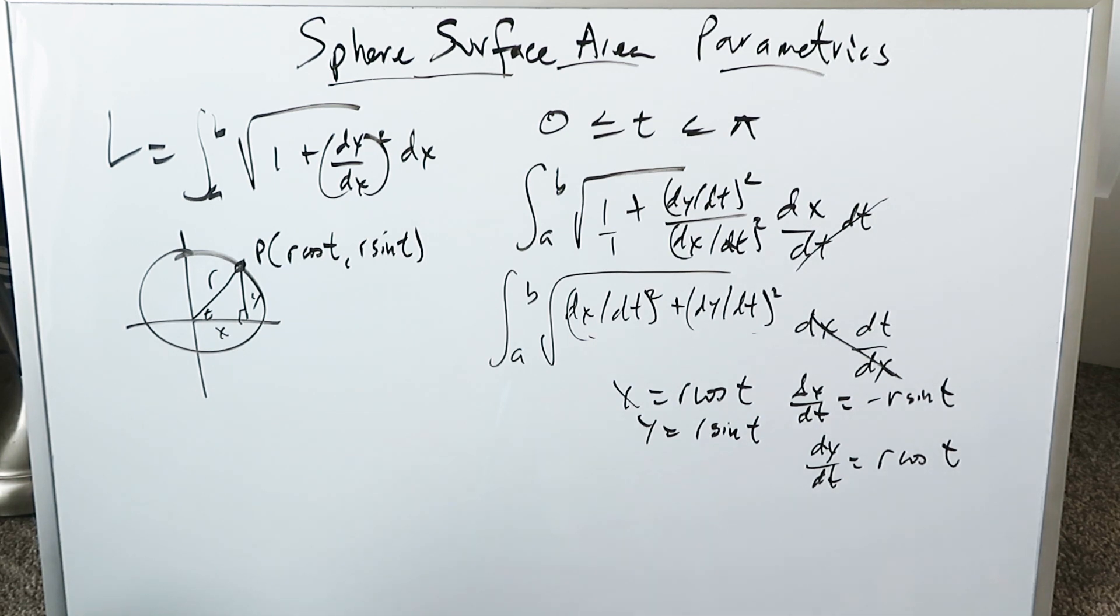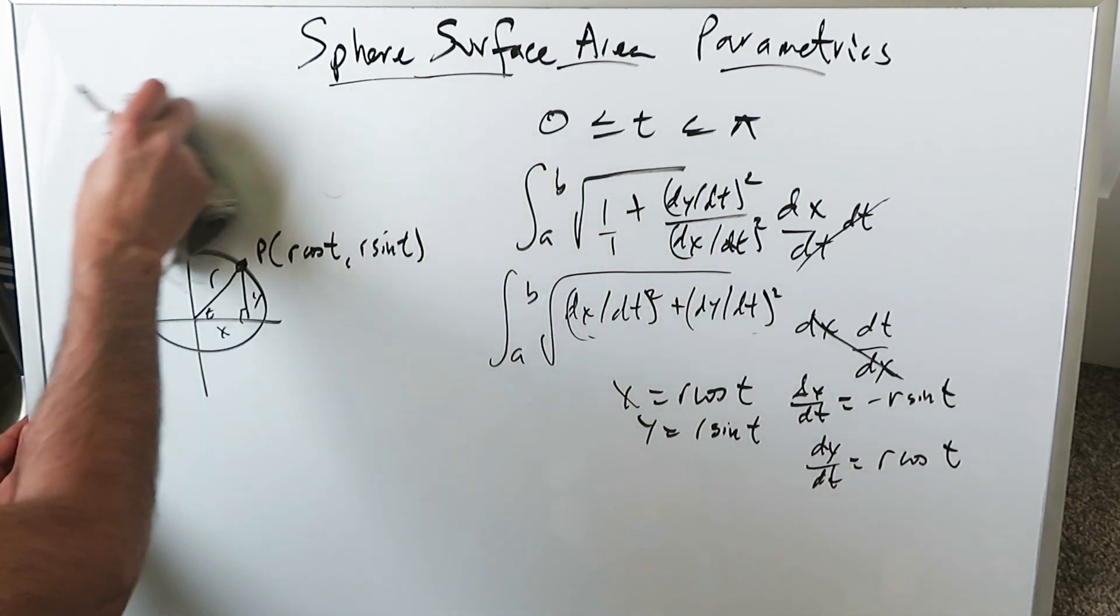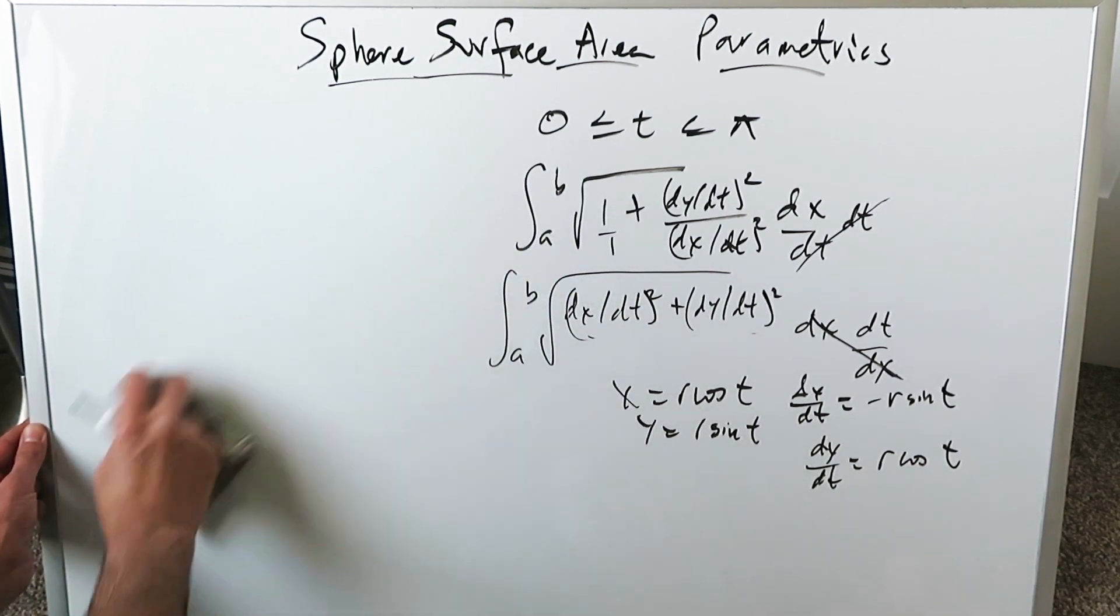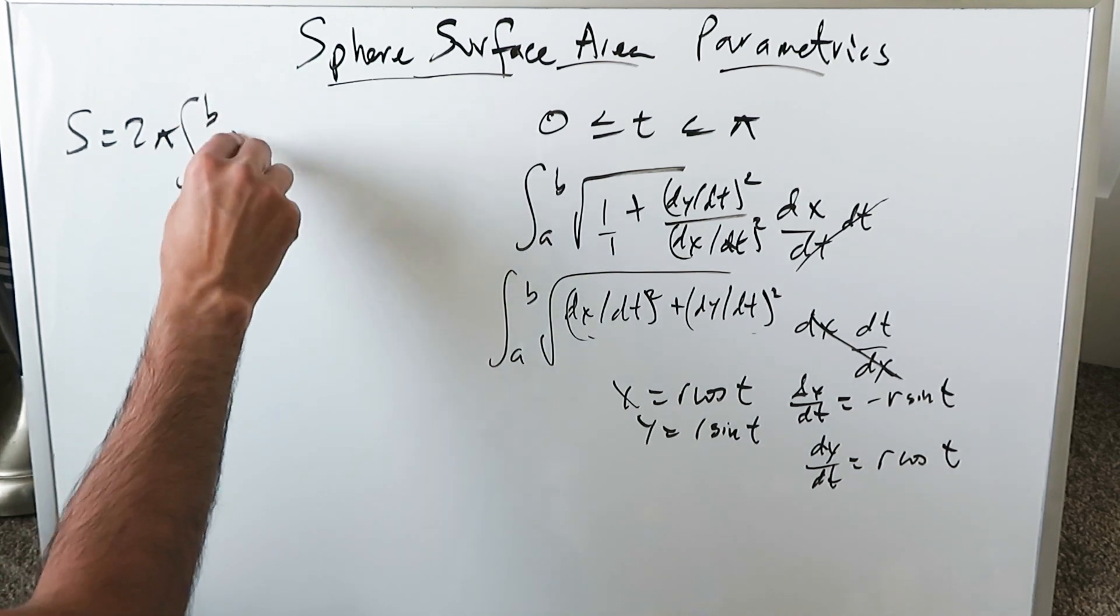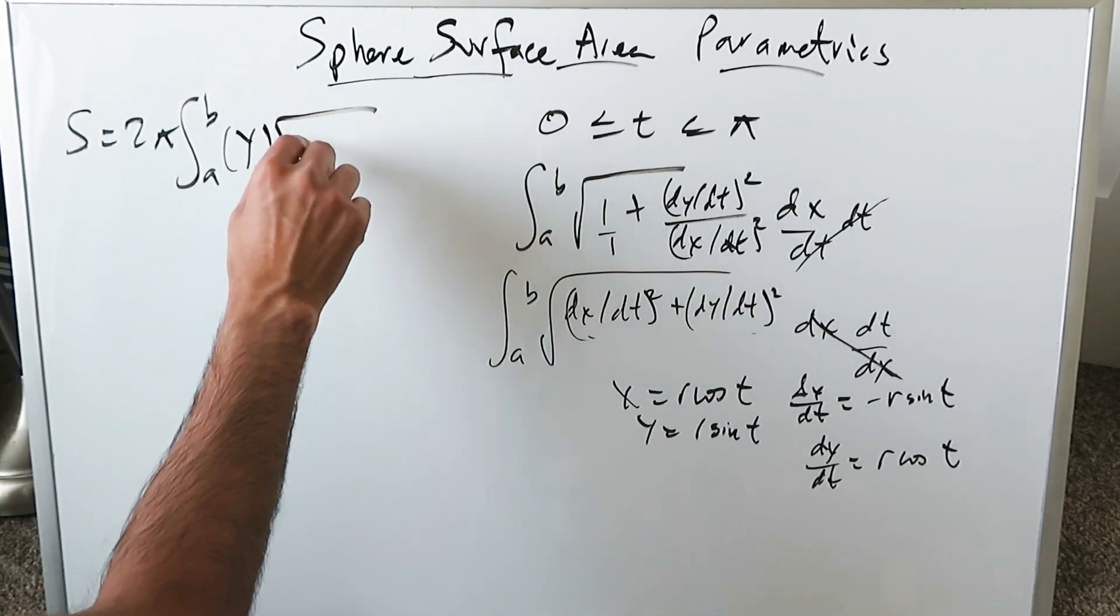I have everything which I need now to bring into the surface area formula. What is the surface area formula? It's the arc length formula with the function attached to it. The surface area formula will be 2π from a lower limit, upper limit, the function y with respect to...